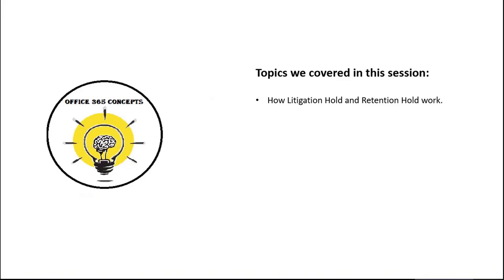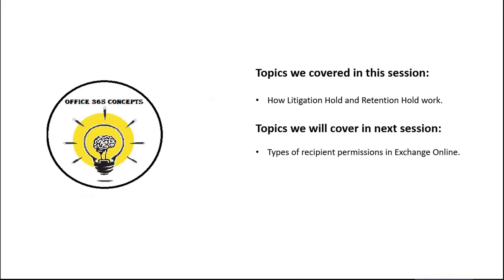In this session, we have discussed what is litigation hold and retention hold, and I have shown you practically how to enable litigation hold and retention hold on mailboxes. In the next session, I will be discussing recipient permissions within Exchange Online — including full access, send as, and send on behalf permissions — and how to enable these from Exchange Admin Center and from PowerShell.